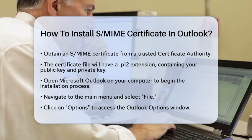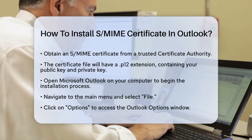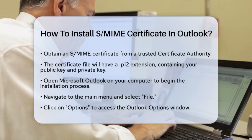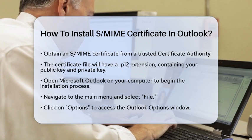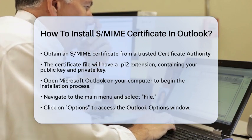First, you need to obtain an S/MIME Certificate. This certificate is usually issued by a trusted certificate authority. It contains your public key and identity information. After you request the certificate, you will receive a file with a P12 extension. This file includes both your certificate and private key.